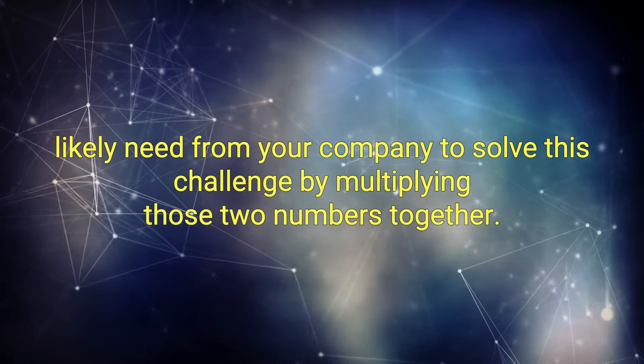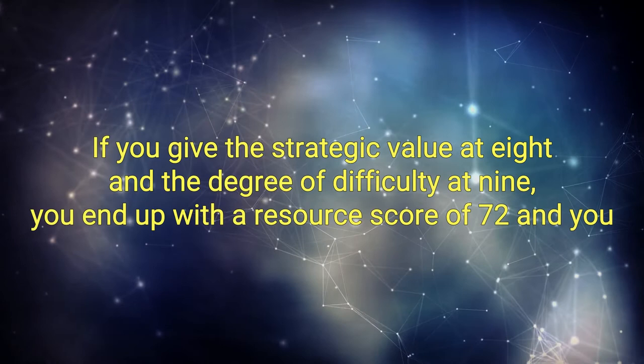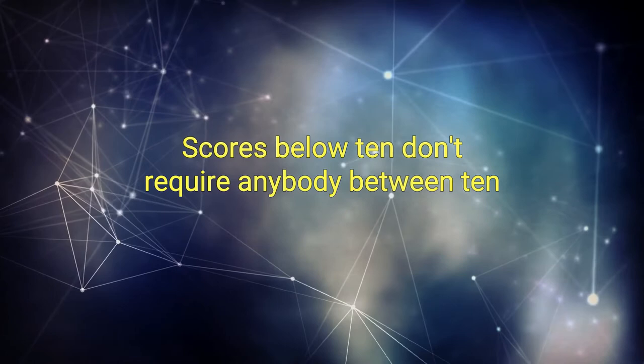Finally, you determine the amount of people you'll likely need from your company to solve this challenge by multiplying those two numbers together. If you give the strategic value an 8 and the degree of difficulty a 9, you end up with a resource score of 72 and you fall within the highest category where you might pull in up to 12 people from your organization to work on this problem.